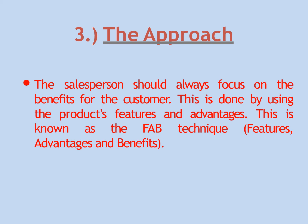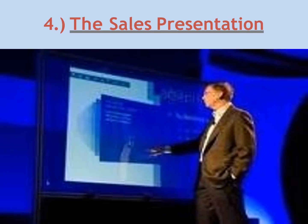This is done using the product's features and advantages and is known as the FAB technique — Feature, Advantage, and Benefit. The salesperson should communicate the features, advantages, and benefits of the product to capture customer attention. By effectively applying FAB, the salesperson can specify the product's benefits and create genuine interest in the customer.